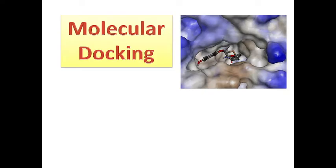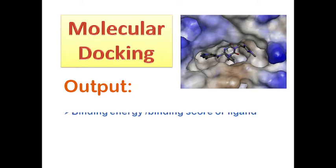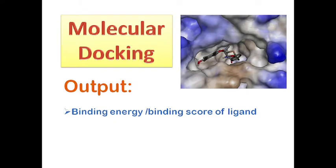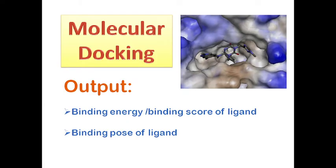In other words, it's a computational test to see whether any chemical compound binds strongly with the target protein or not. Molecular docking also predicts the binding pose of the chemical compound. So we get two kinds of output or results from the molecular docking experiment. The first output is binding energy of the ligand or chemical compound, and this binding energy is sometimes also expressed in terms of binding score. And the second is the binding pose or the conformation of the ligand molecule.